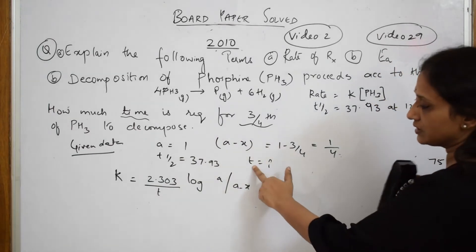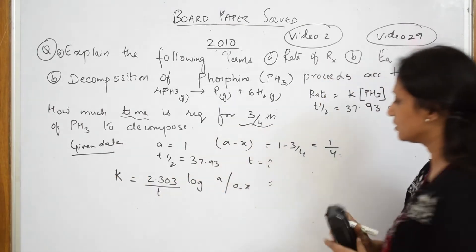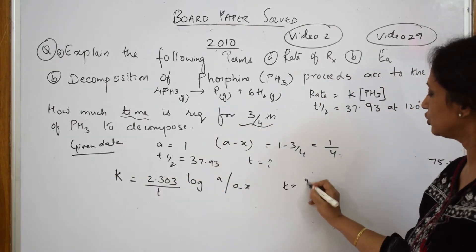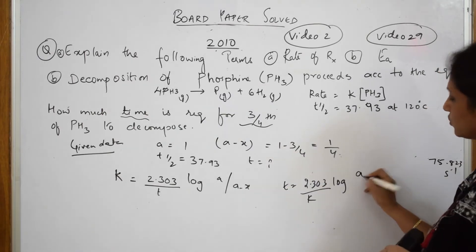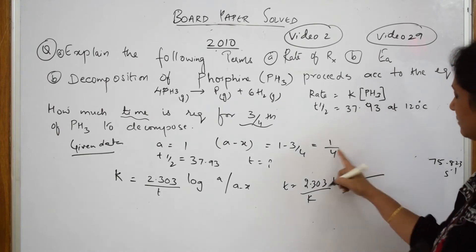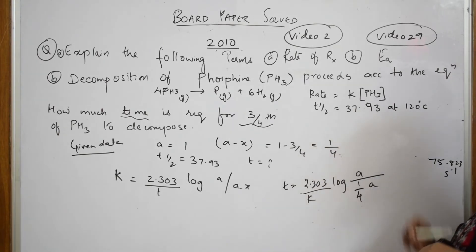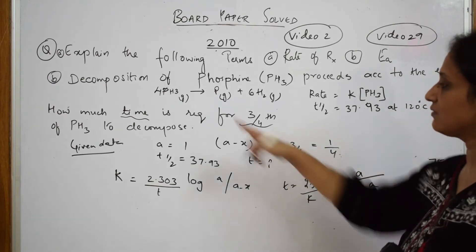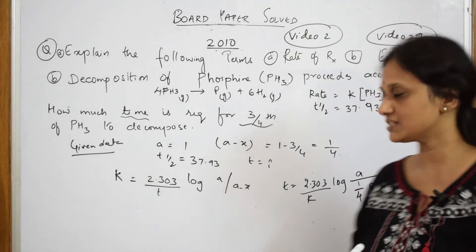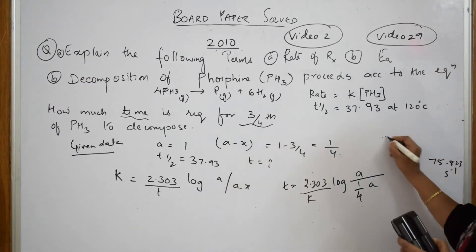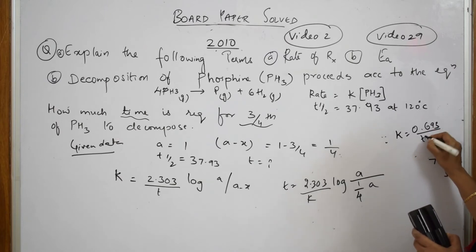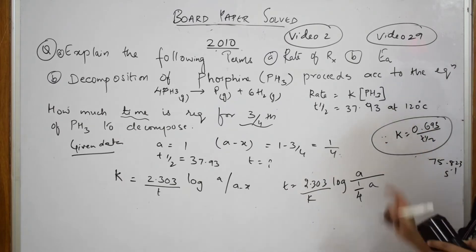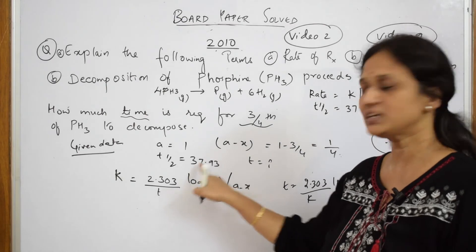Now substitute in the formula. What do we have? What should I find out? I have to find out T, isn't it? Take this T out. What do I get? I get T is equal to 2.303 by K log of, what is A? So, 1, isn't it? So 1 divided by 1/4. Now, what is K value? Is K value given in this formula? It's a numerical, not given, isn't it? But I very well know, we very well know, K is equal to 0.693 by T half. So now we know this formula for the half-life period. So substitute that formula here, 0.693 by T half. What is T half given to me? 37.93.